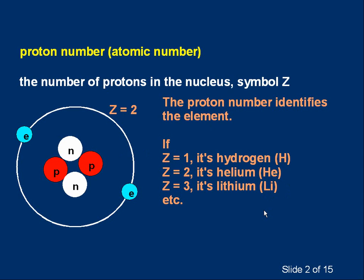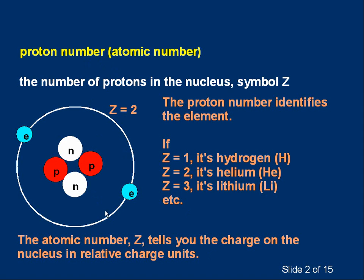There are lots more elements, of course — we'll talk about those in a moment when we mention the periodic table. Another very useful thing to remember about the proton number, or atomic number, is it gives you the charge on the nucleus. The atomic number Z tells you the charge on the nucleus in relative charge units. The charge on a proton is plus one unit; the charge on a neutron is zero. The total charge on the nucleus in this diagram is plus two — that is the atomic number. In a neutral atom, the number of electrons equals the number of protons, so the overall charge is zero, and the number of electrons is also equal to the atomic number.